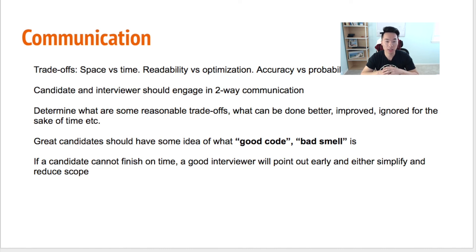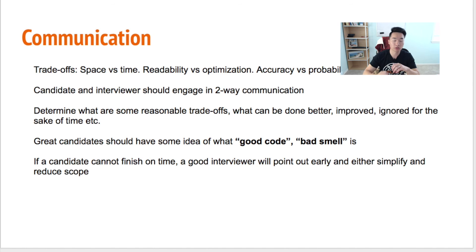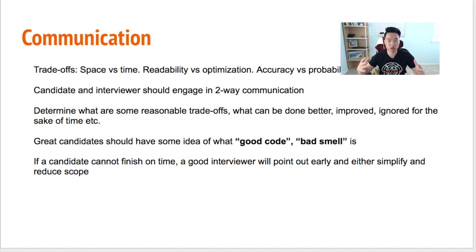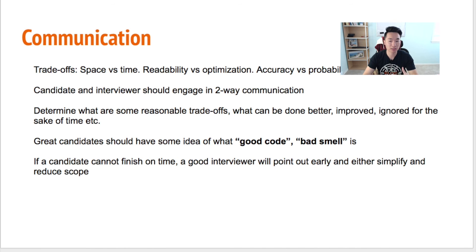Great candidates should have a good idea of what code smell is. If a candidate cannot finish on time, a good interviewer will point it out and simplify or reduce scope — this is especially true for junior candidates. A more senior candidate should recognize when they can't finish and proactively raise it, saying the scope is too big and proposing to implement certain sections first. These are communication skills that interviewers are looking for.